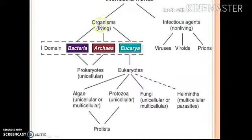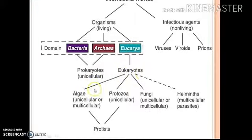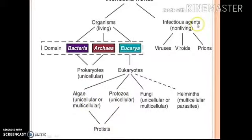The microbial world consists of living organisms and non-living infectious agents. Among living organisms, three domains exist: Bacteria, Archaea, and Eukarya. Bacteria and Archaea are together called prokaryotes and are unicellular. Eukarya includes algae (unicellular or multicellular), protozoa (unicellular), fungi (unicellular or multicellular), and helminths (multicellular parasites). Algae and protozoa together are called protists. Non-living infectious agents, also called obligate parasites, include viruses, viroids, and prions.